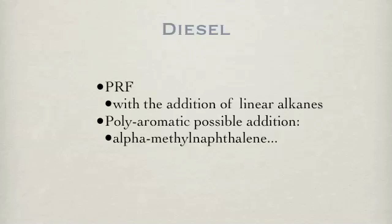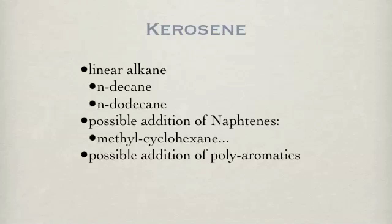Common surrogate fuels for diesel include the primary reference fuel supplemented with larger linear alkanes, typically decane or dodecane, or even possibly alpha-methylnaphthalene, a double-bonded aromatic with a methyl group. Surrogate fuels for kerosene are commonly large linear alkanes such as decane or dodecane, with, for example, a methyl cyclohexane or other cyclohexane added. Other additions include simple aromatics such as toluene.